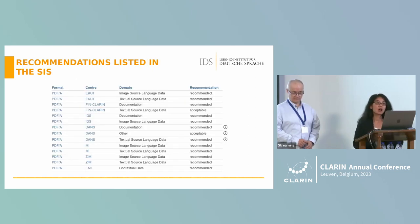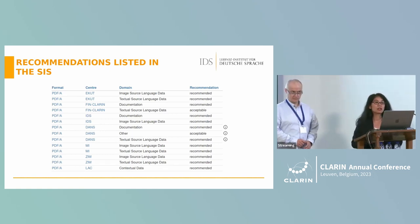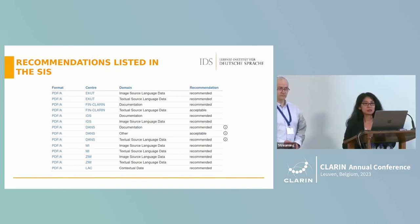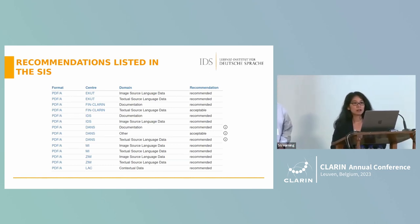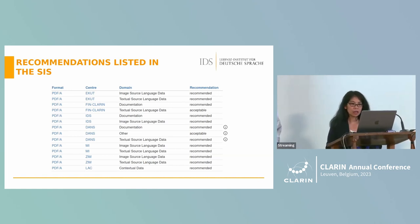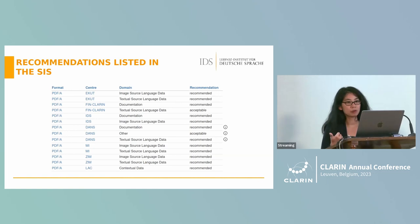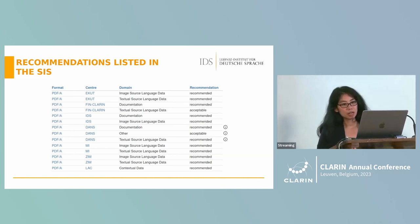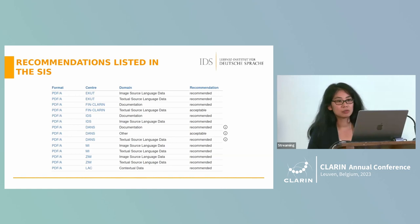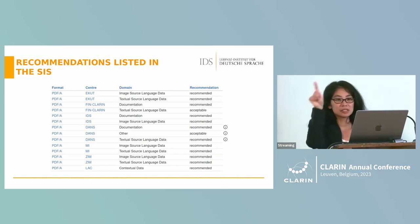In the SIS, the recommendations are visualized in a table with four columns representing the main parts. We can see that one format can be recommended for multiple domains — for example, multiple centers recommend PDF for image source language data, as well as for documentation and textual source language data. On the far left there is an icon that will be explained later.